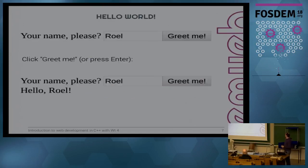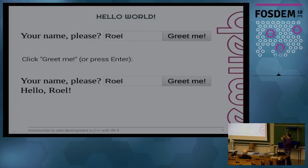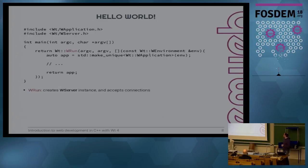I'm going to show you how to make a simple hello world style application. Just showing 'hello world' is a bit boring, so this one asks for your name — it says 'your name please' — and then you can enter your name in a box. There's a button you can click, or you can press Enter inside the box, and you get a greeting. Of course, every C++ application starts with a main function.